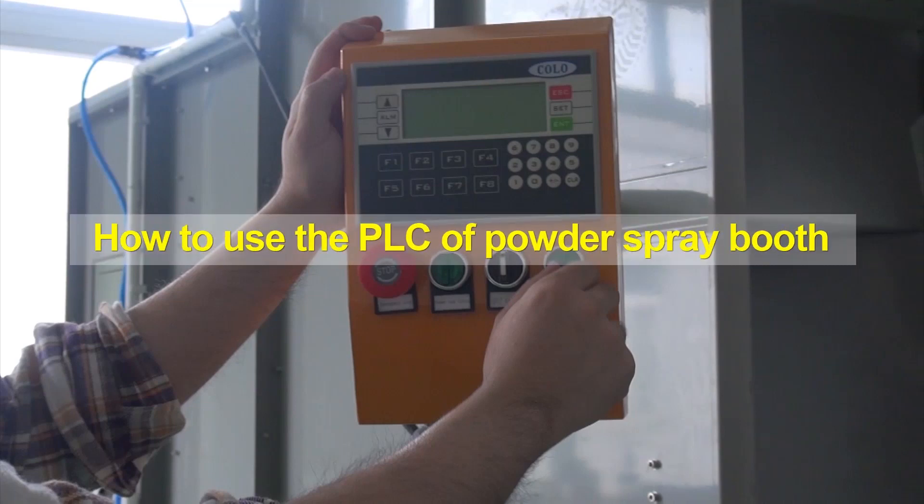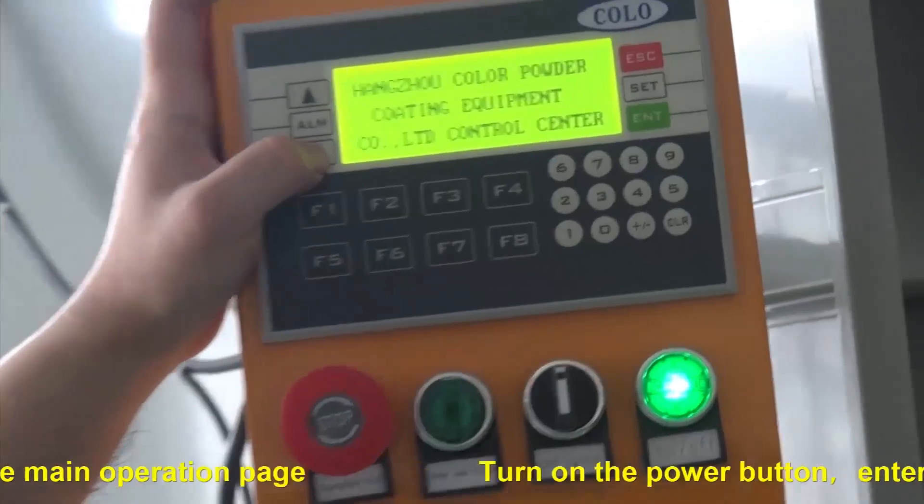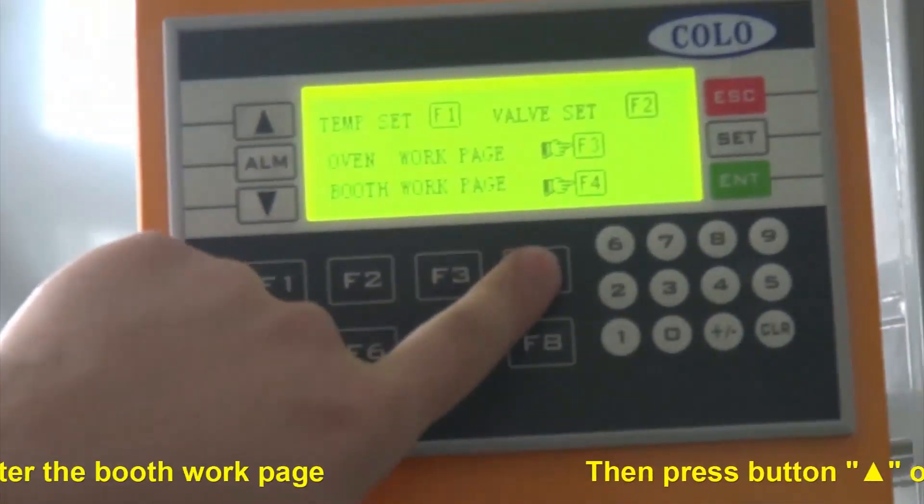How to use the PLC of Powder Spray Booth. Turn on the power button, enter the home page, then press button up or down to enter the main operation page.